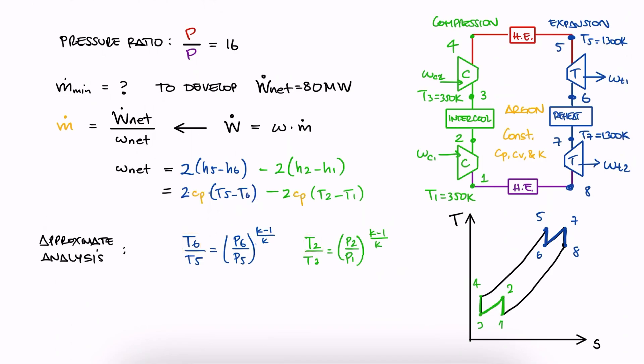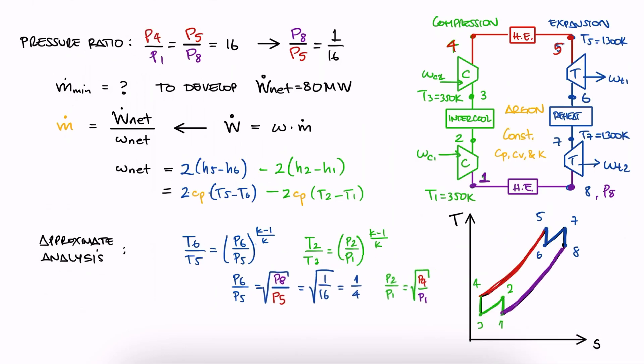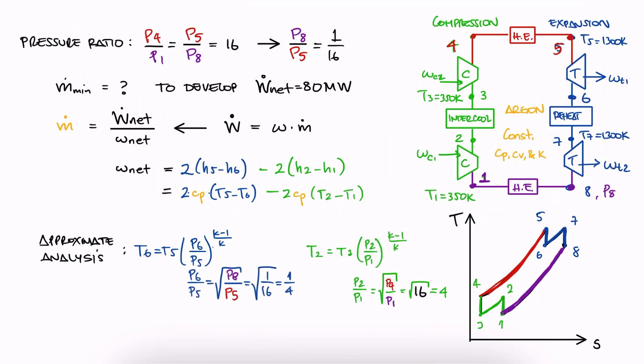The second concept explained in the previous example is that the pressure-ratio P6 over P5 is the square root of P8 over P5, the square root of 1 over 16, or just 1 over 4. And with the same concept, we can conclude that the pressure-ratio P2 over P1 is the square-root of P4 over P1. We solve for T6 and T2, the two temperatures we don't have yet.